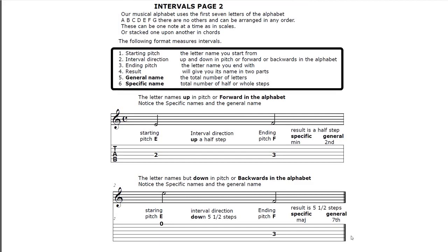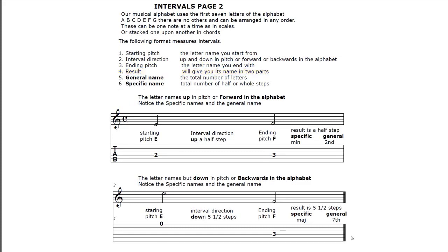The following format measures intervals - so these are rules. The starting pitch, the letter name you start from, you include that in the count. Interval direction: up and down in pitch, or forward or backwards in the alphabet. The ending pitch is the letter name you end with. The result will give you its name in two parts. The general name is the total number of letters - so if I go A, B, that's two.